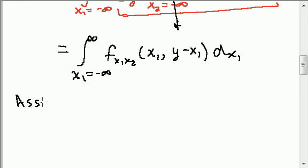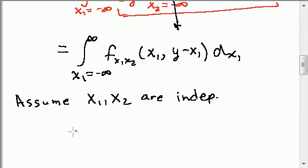Let's assume that the two random variables are independent. And that means that the PDF here, the joint PDF, is the product of two PDFs.